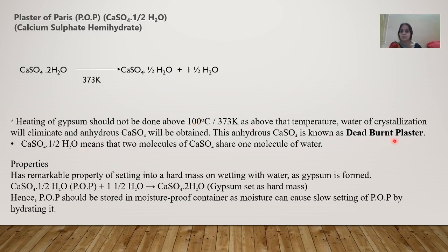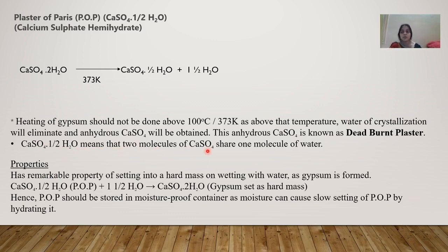This anhydrous product is known as dead burnt plaster and cannot be used. You cannot add water to dead burnt plaster to convert it back to POP — it cannot be remolded. Once it is burnt, it is called dead burnt plaster. CaSO4·½H2O means two molecules of CaSO4 share one molecule of water, so one CaSO4 has half a molecule of water.